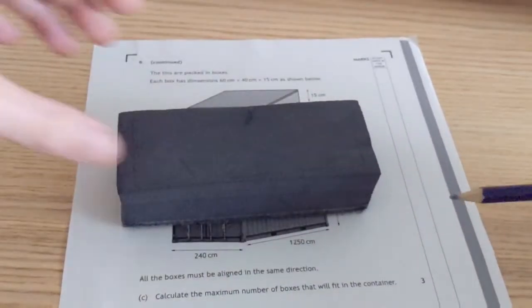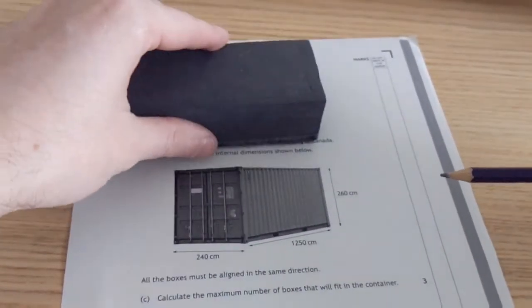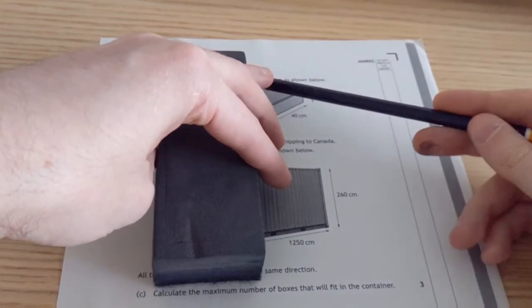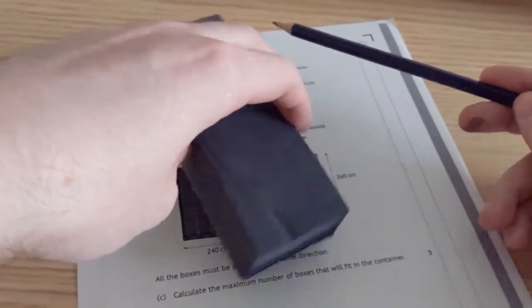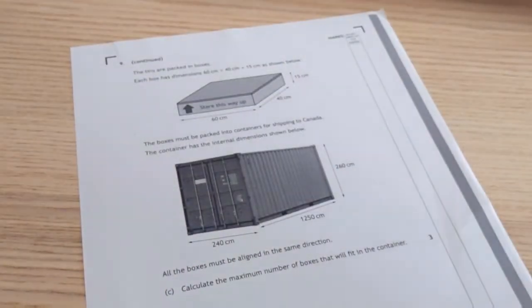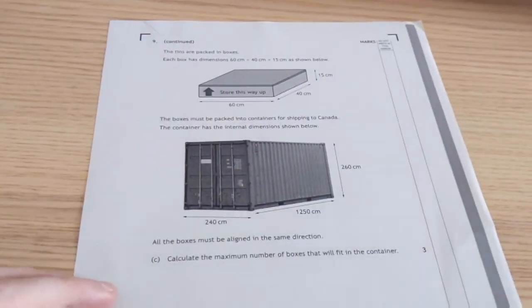If you imagine this was our box, we can only ever stack it this way or this way. I'll keep the 15 along that side. So we've only actually got two ways of doing it this time. So it makes it much easier. But you need to remember that. You need to remember that there are only two ways of doing it.